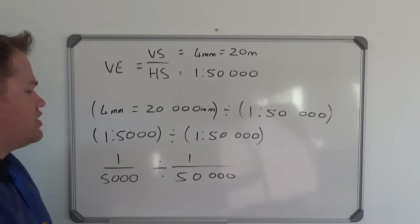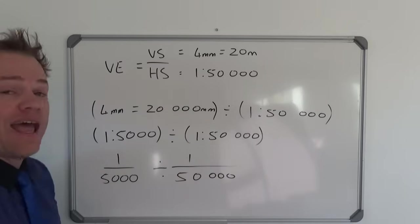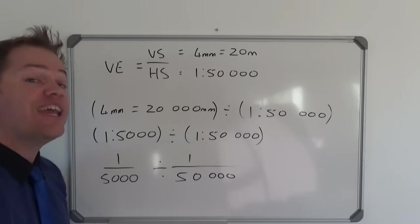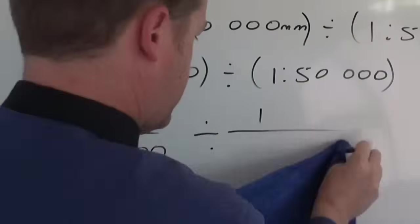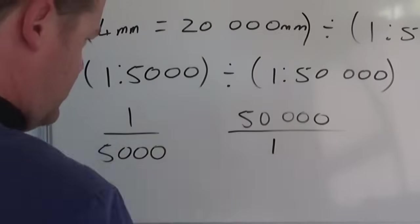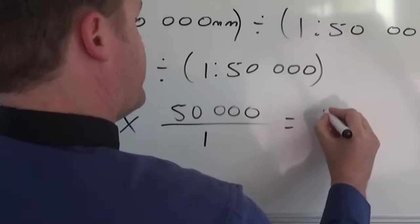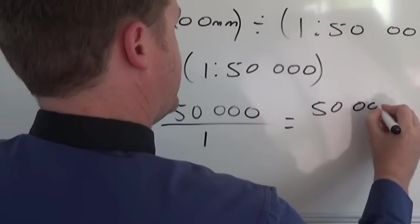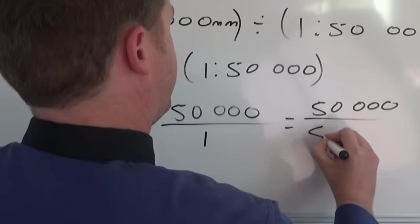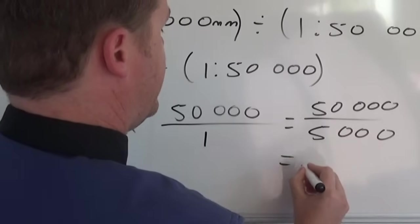And now what we do in maths is when we do a division sum like this is we swap these two numbers and then we do a multiplication sum. So now we have 50,000 divided by 5,000 and what we'll get is 10.